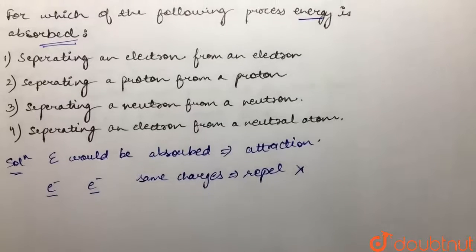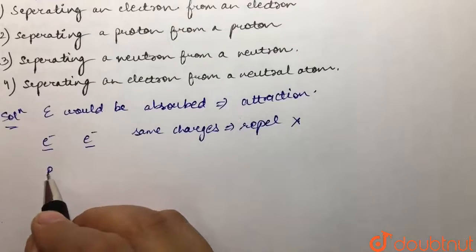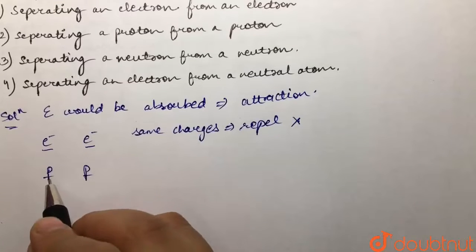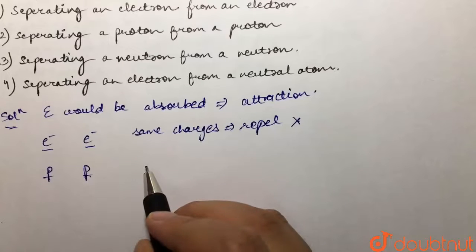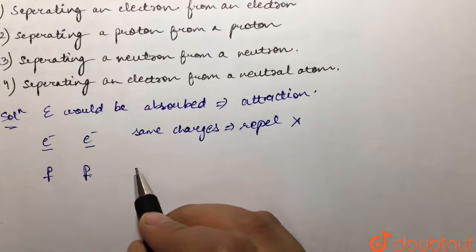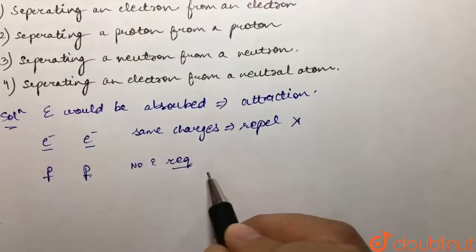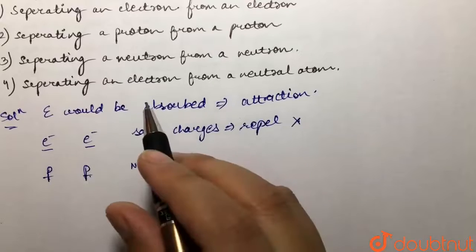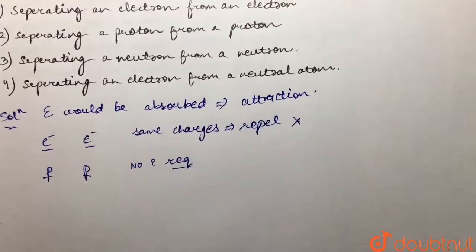The second option is separating a proton from a proton. A proton is a positively charged particle, so again the two protons are of the same charge. Same charges would repel and hence there would be no energy requirement in this process as well.